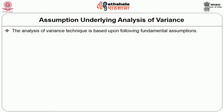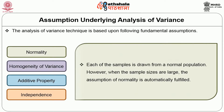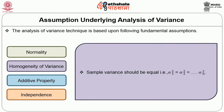Let us discuss the assumptions underlying analysis of variance. The technique is based on the following fundamental assumptions. The first is normality: each of the samples is drawn from a normal population. However, when the sample sizes are large, the assumption of normality is automatically fulfilled. The second assumption is homogeneity of variance — that is, sample variances should be equal: σ₁² = σ₂² = ... = σₙ².